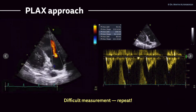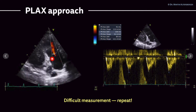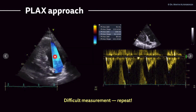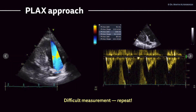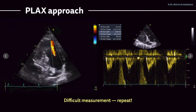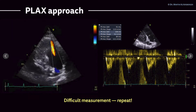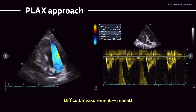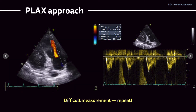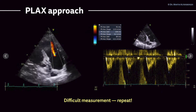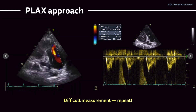You can do the same in a parasternal long axis approach. This is an atypical view of the parasternal long axis, where we have a certain degree of pulmonary regurgitation — I would say mild to moderate. You can measure the pulmonary acceleration time here as well, and you see three measurements, all three a little bit different. Overall, the pulmonary acceleration time in this case is definitely severely reduced.